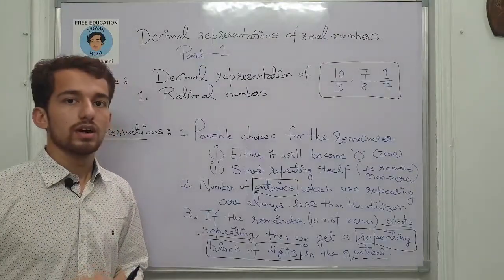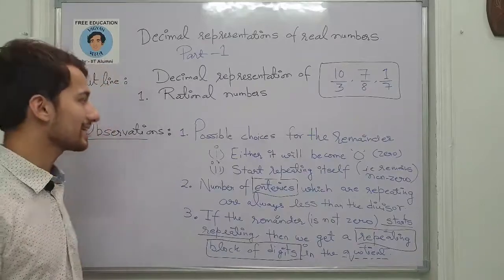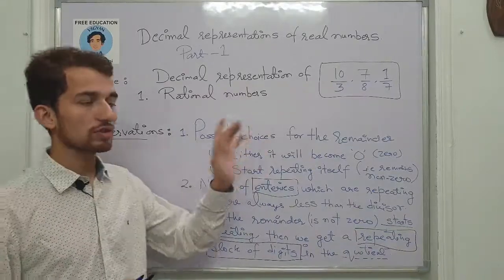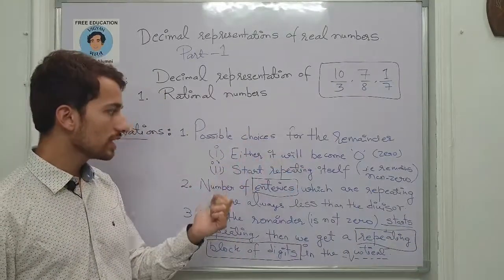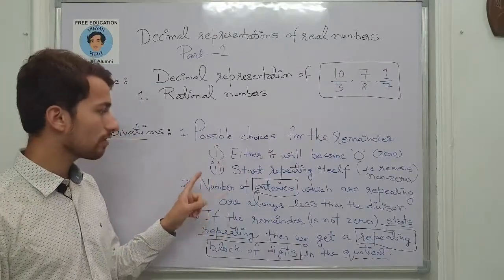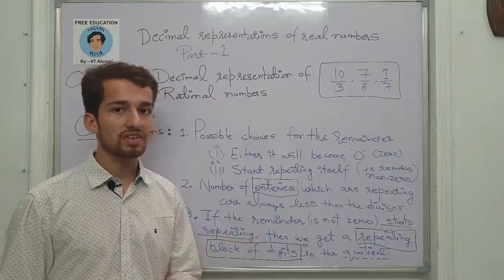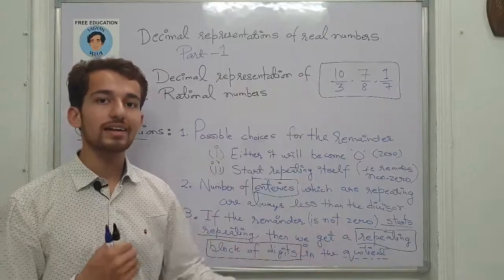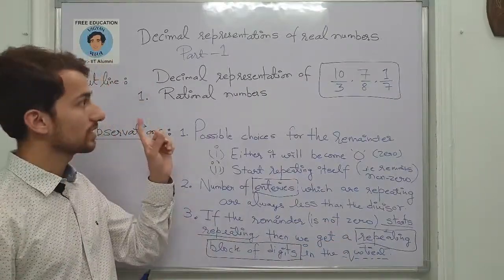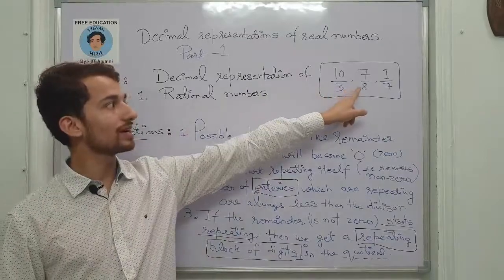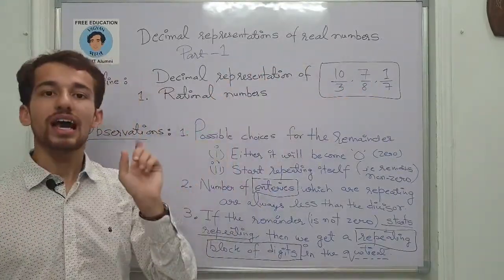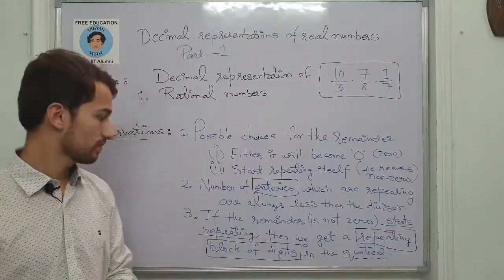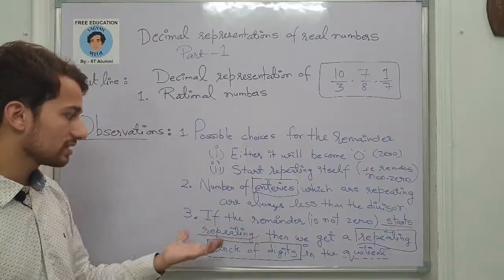I've written all the observations we've quoted. If you understand these properly: the first is that the possible choices for remainders are either 0 or non-zero. The second is that the number of entries which are repeating are always less than the divisor. The third, and most important, is that if the remainder is not 0 and starts repeating itself, then the number of repeating entries in the quotient are always less than the divisor. That concludes this first part.